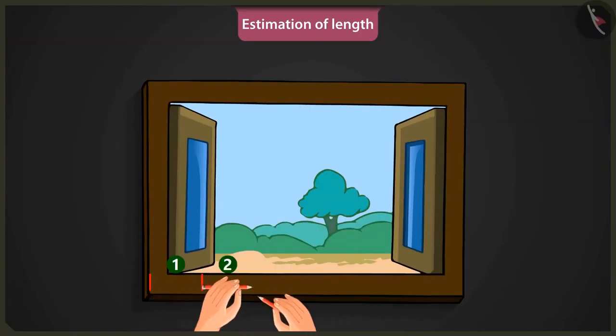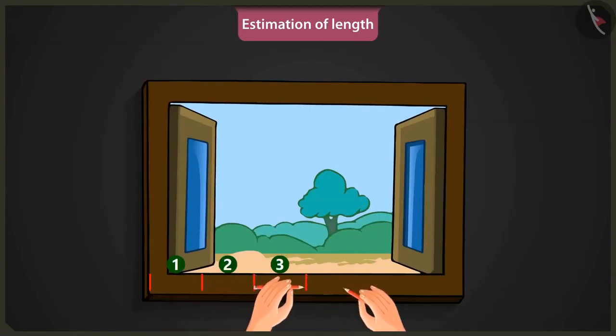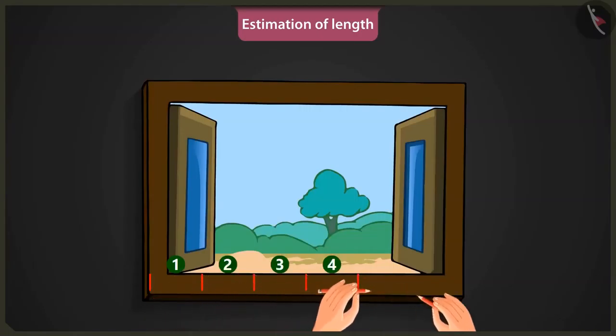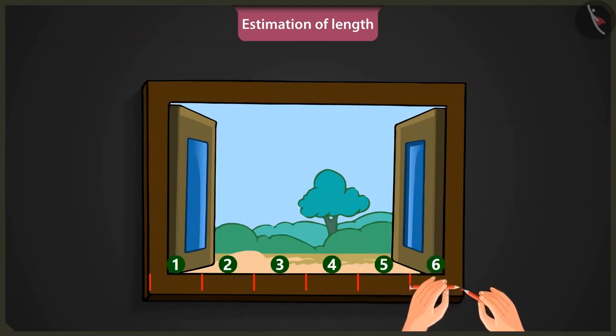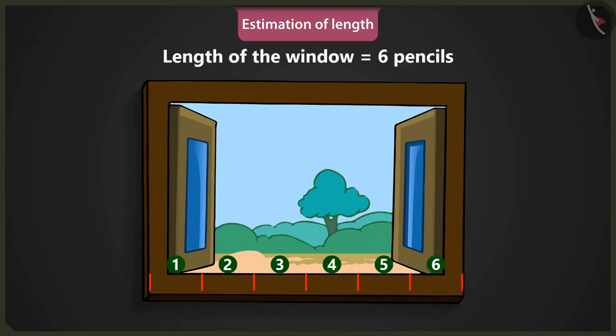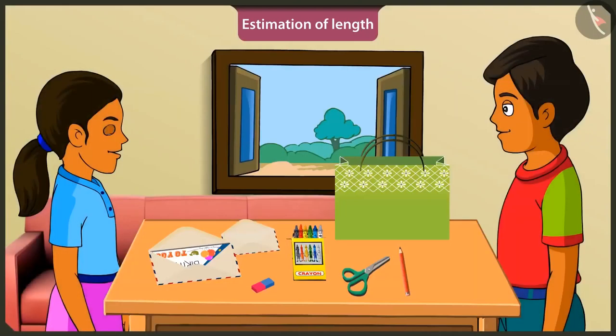One, two, three, four, five and six. The length of this window is six pencils long. Yes, so Mintu, like this, we can consider the measure of a smaller object as a unit to estimate the length of a bigger object.